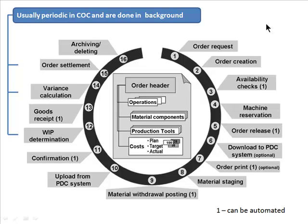This is the broad process for production order based manufacturing. We're looking at the cycle from the first step to the last. The first step is an order request, just like the common SAP process of having something preliminary then an order. An order request could be, for example, a planned order.